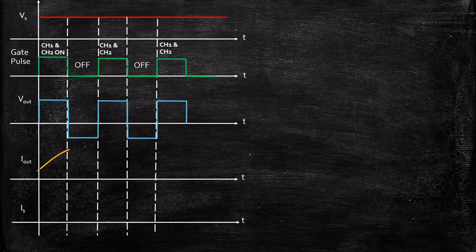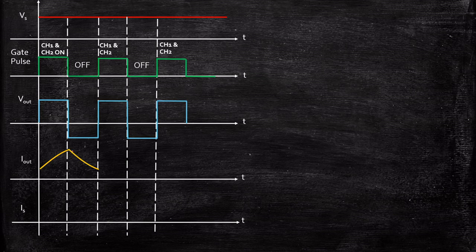The inductor current may start from a non-zero value depending on the assumed inductance. At the point when CH1 and CH2 are turned off, the energy in the inductor starts discharging — the inductor supplies energy back to the source, while some is dissipated through the resistor R. This results in a decreasing waveform. In the next cycle the inductor charges again, and in the following cycle it discharges again, feeding power from load to source — the cycle repeats.